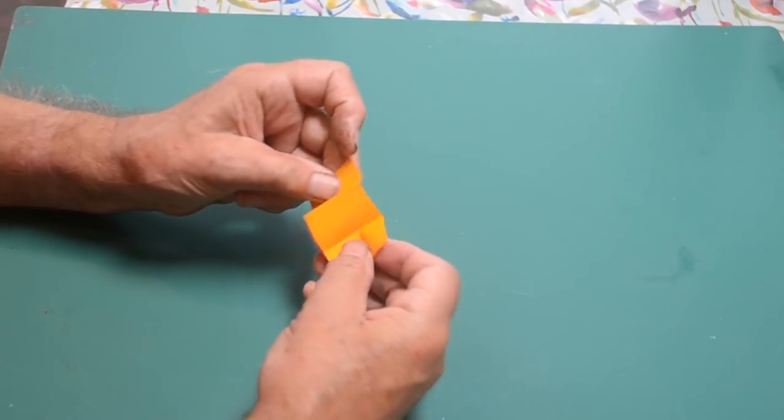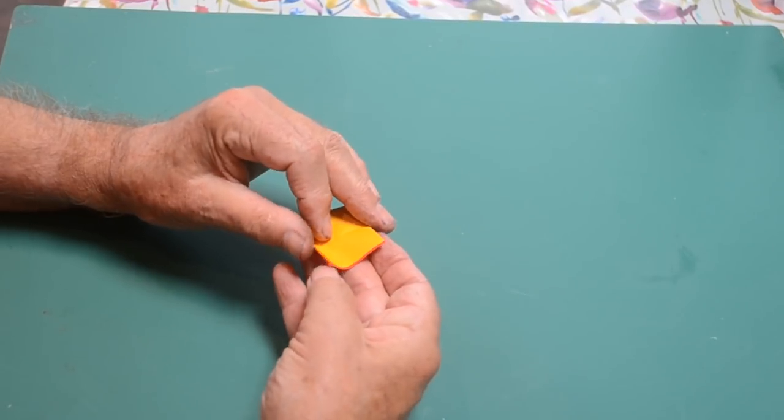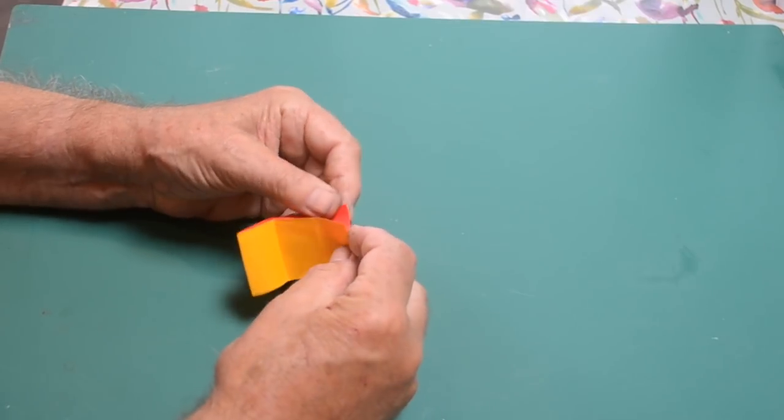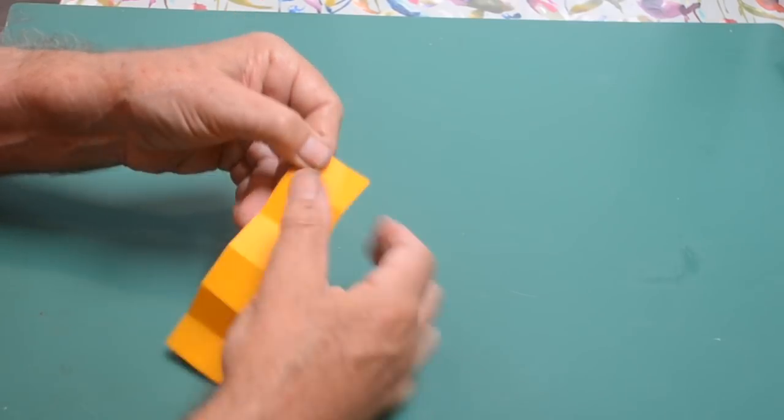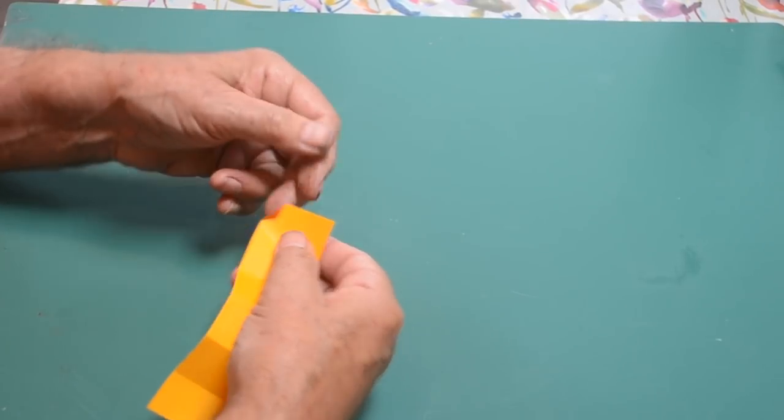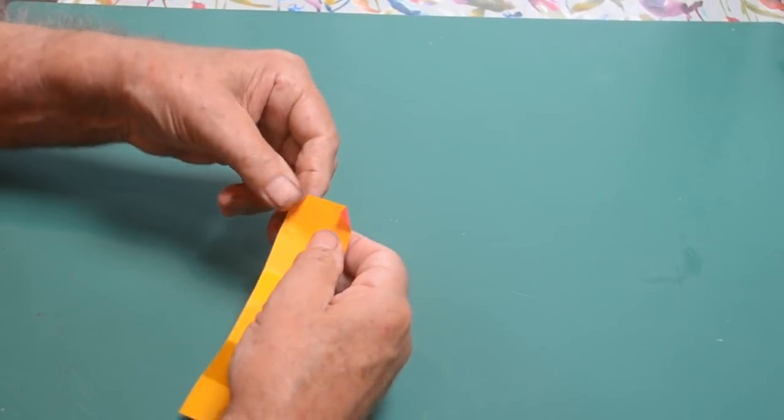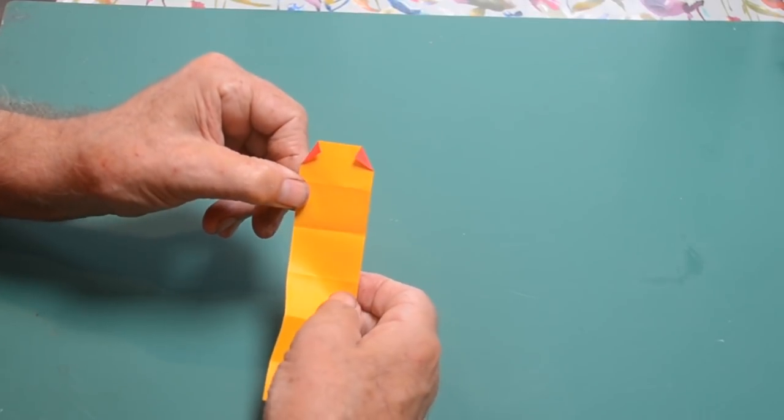Now when you undo the strip, you'll find you have six sections now all the same shape. But we're going to have to alter the folds. First of all, just turn over two corners at one end like so to make the head. These are the eyes of the caterpillar.